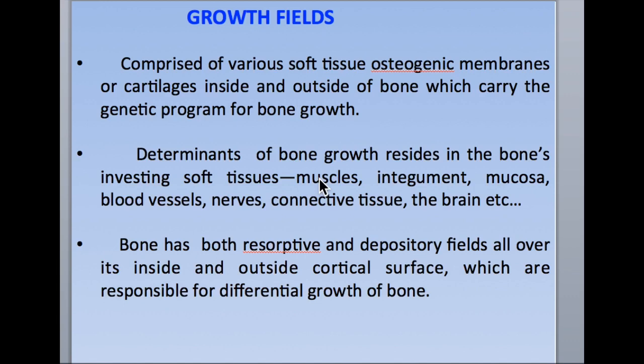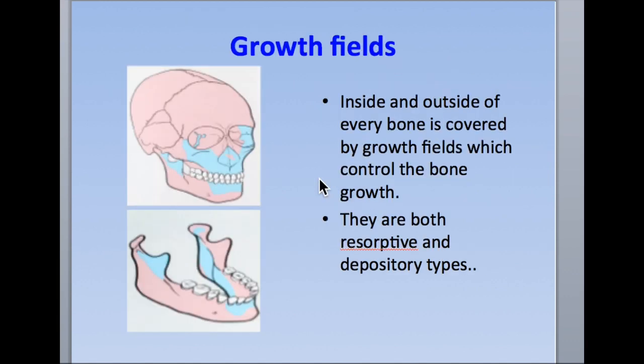The growth fields are very large and are responsible for the formation of the entire nasomaxillary complex and mandible. If you see here, the growth fields are present in the form of a blue area — these are the outside structures, and these are the inside structures lying on the mandible area. Between these soft tissues, the bony structures — maxilla and mandible — are present. The blood vessels, nerves, glands, tongue, and muscular tissues all inherently contain the information required for the formation of bone.